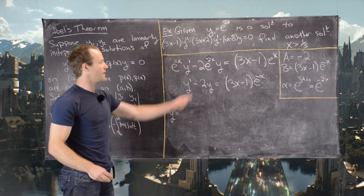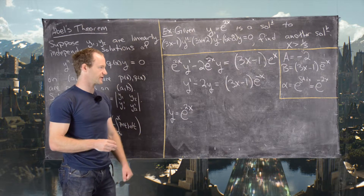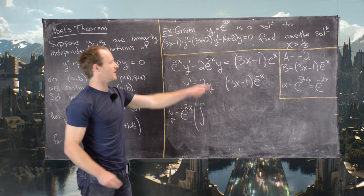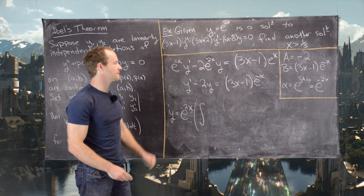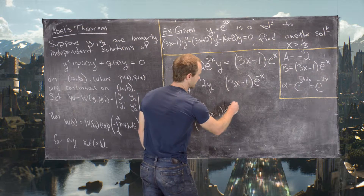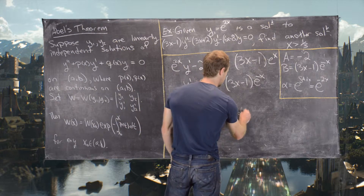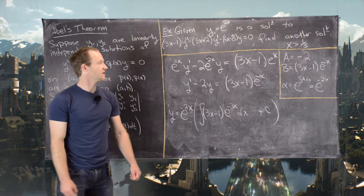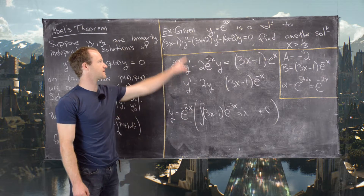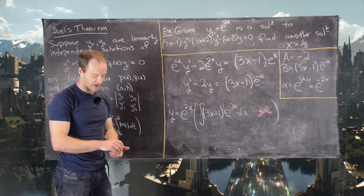Using the theory of first-order linear differential equations, the solution is y = (1/α) · ∫α·b dx = e^{2x} · ∫(3x − 1)e^{−3x} dx plus a constant. We can drop the constant term because it contributes only a multiple of the original solution e^{2x}, which gives no new information.